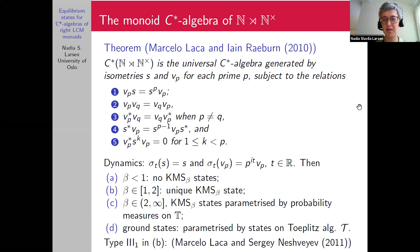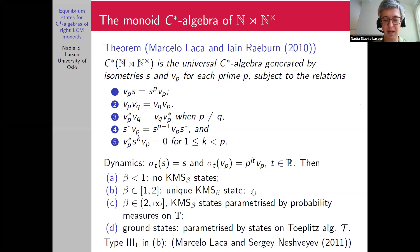Resuming: in the example of the affine monoid, the KMS states appear quite different depending on β. In the critical interval from one to two, there is a unique KMS state. As shown by Laca and Neshveyev, it is a type III₁ factor state. Above β = 2, states become type I, and they remain type I.